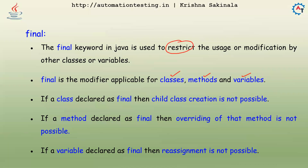If a class is declared as final, then child class creation is not possible — you cannot extend that class, so you cannot create child classes or make it a parent class. If a method is declared as final, you cannot override that method.